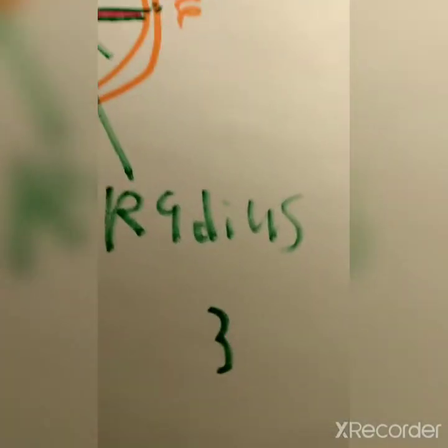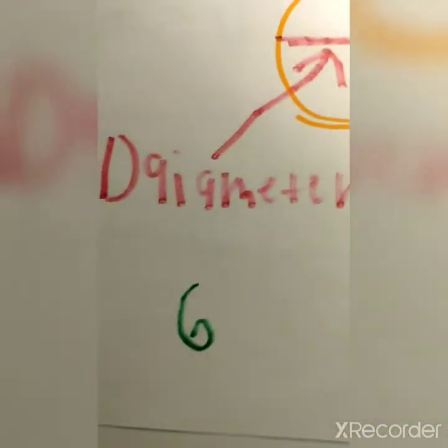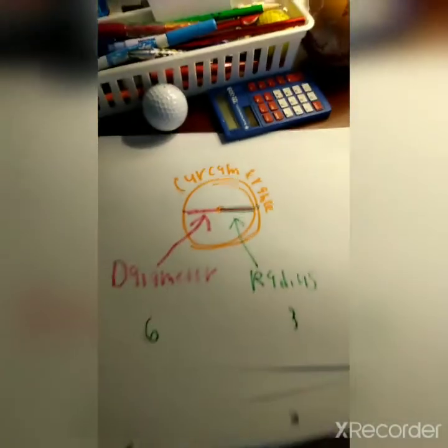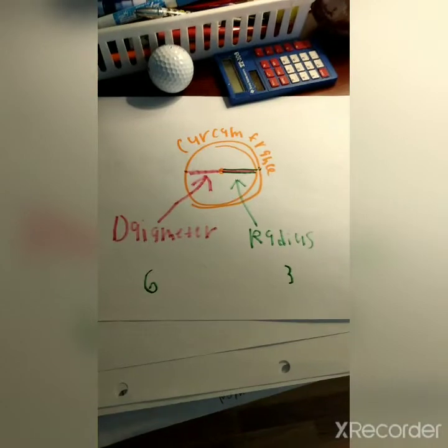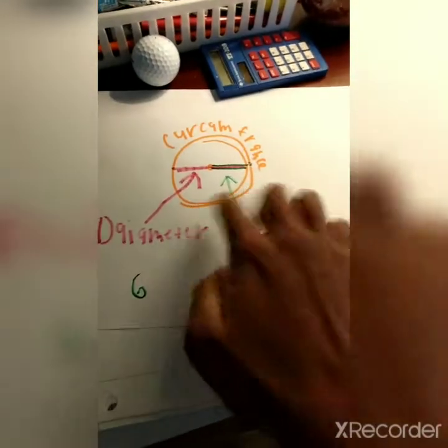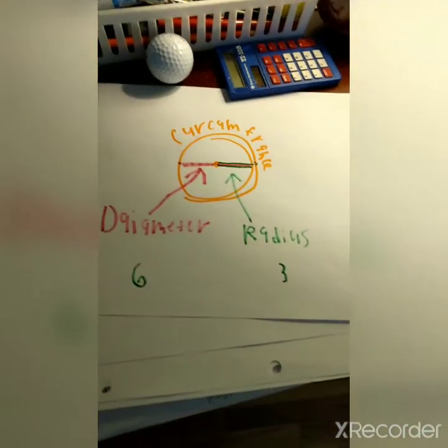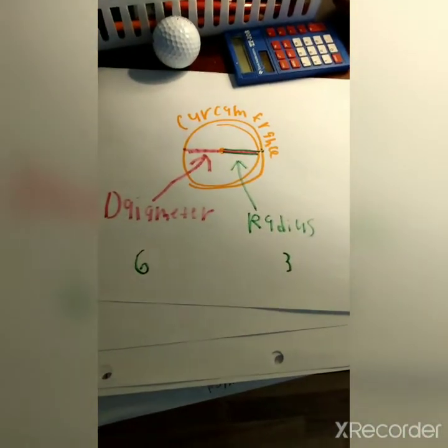Awesome! We now know the radius, the diameter, and the circumference. So since we know all three definitions, now we can do the math.